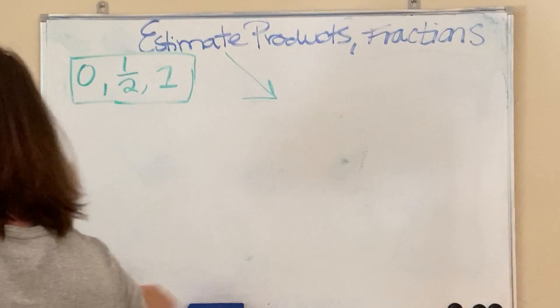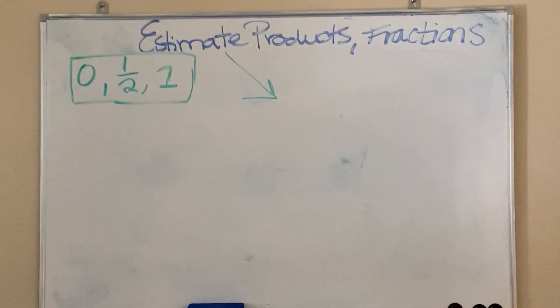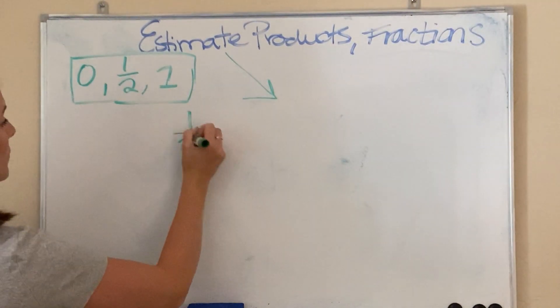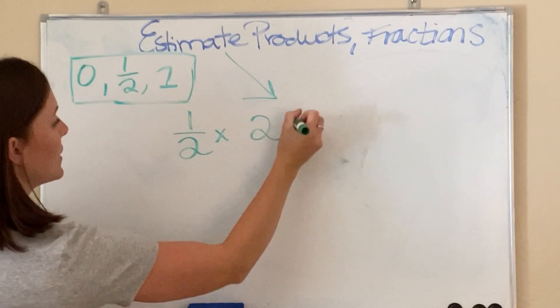So, if you haven't seen my lessons on how to round fractions on a number line, please check that out so that you understand how I'm rounding these fractions. Let's go ahead and do one by a whole number. Let's say we have 1/2 times 25.